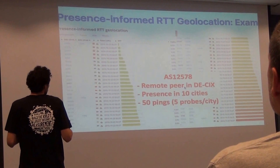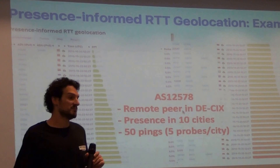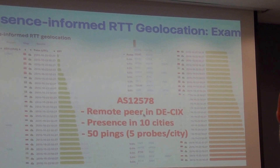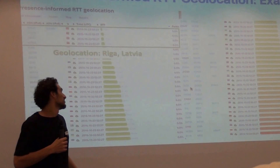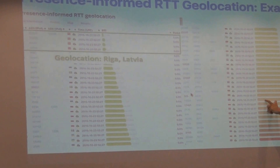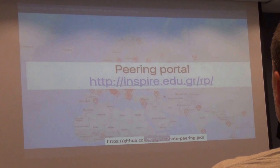Here's an example. This is an AS that we determined to be a remote peer at an IXP. From PeeringDB we found it has possible presence in 10 cities. We selected five probes from each city, ran pings, got the RTTs, and implemented this using the Atlas Streaming API. We took the minimum RTTs from probes in each city and found that the AS is located in Riga, Latvia. You can see the delays from Germany — the remote peer — are pretty high, confirming it is indeed a remote peer, located in Riga.